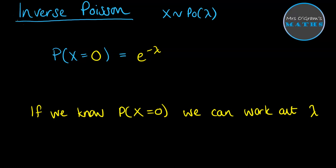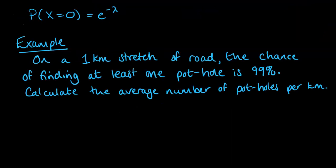Let's take a look at an example. On a one kilometer stretch of road, the chance of finding at least one pothole is 99%. Calculate the average number of potholes per kilometer.